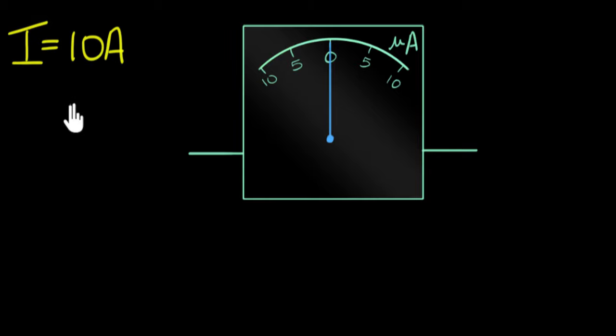Now she doesn't want to buy a new ammeter. So she comes to you and says, hey, can you somehow make this galvanometer measure up to 10 amperes? And being a good friend, you say, sure, I can do that. That looks like a lot of work, so maybe you just pay me 200 rupees for that. And she says, okay, cool.